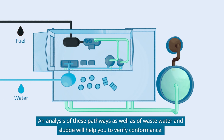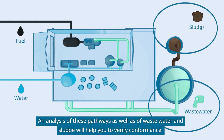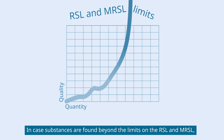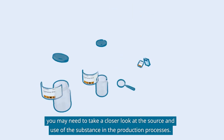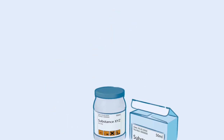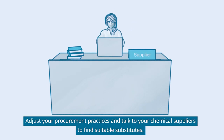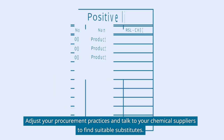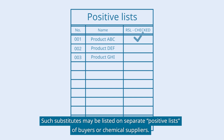An analysis of these pathways, as well as of wastewater and sludge, will help you to verify conformance. In case substances are found beyond the limits on the RSL and MRSL, you may need to take a closer look at the source and use of the substance in the production processes. Adjust your procurement practices and talk to your chemical suppliers to find suitable substitutes. Such substitutes may be listed on separate positive lists of buyers or chemical suppliers.